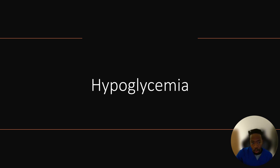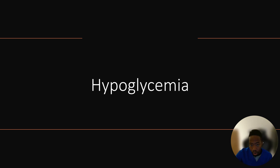Hypoglycemia occurs when the body does not have enough blood glucose to support adequate function. Typically, a blood sugar below 70 indicates hypoglycemia, but this range may actually vary based on other factors such as BMI. Some signs and symptoms of hypoglycemia include shakiness, nausea, loss of color or pallor, lightheadedness, sweating, hunger, poor concentration, anxiety, and headache.